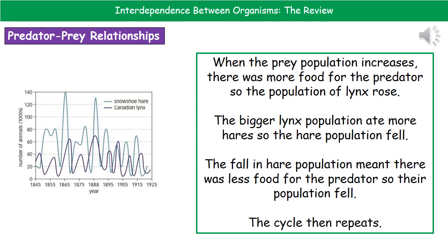Wherever we have predators and prey, we've got a relationship between them. Perhaps the best example you've studied is the relationship between the snowshoe hare and the Canadian lynx — you've probably all seen this graph many times. What we find is that when the prey population increases, not long after the population of lynx also increases. As the prey decrease, the predators also decrease. There is this cyclical relationship between predator and prey.